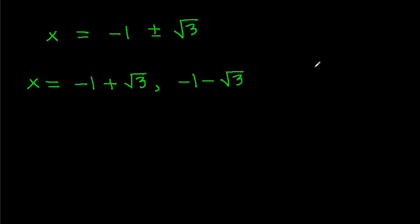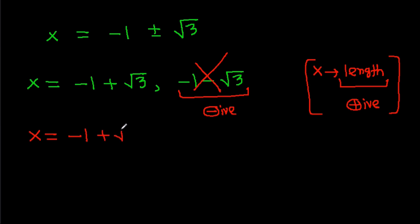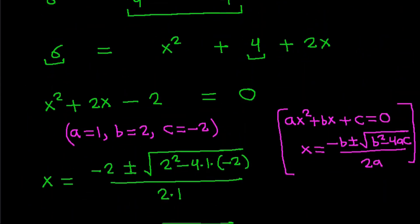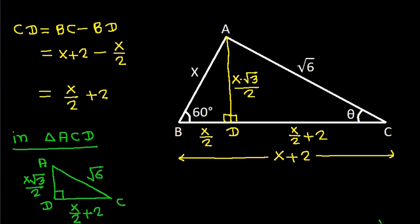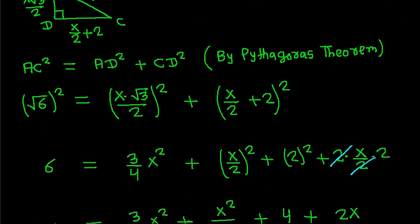Since x is a length, it should be positive. The value minus 1 minus root 3 is negative, so it is not possible. Therefore x equals minus 1 plus root 3, which is root 3 minus 1.